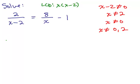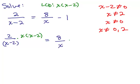We're going to multiply each term on both sides by x times x minus 2. So for the first term, 2 over x minus 2, we multiply it by x times x minus 2. The next term on the other side is 8 over x, and we multiply that also by x times x minus 2. Then minus 1 — there's no denominator, just the number 1 — so we multiply that times x times x minus 2.